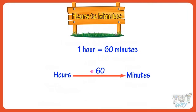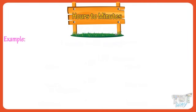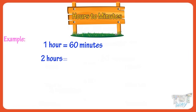Let's see some examples. One hour equals 60 minutes. So two hours will be multiplied with 60. Two hours equals 2 multiplied by 60, equals 120 minutes.